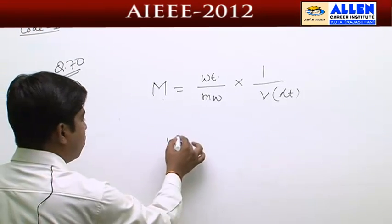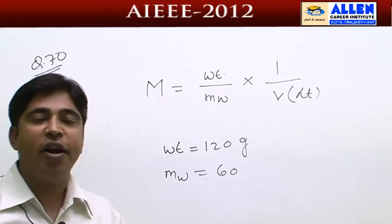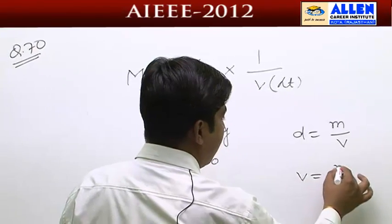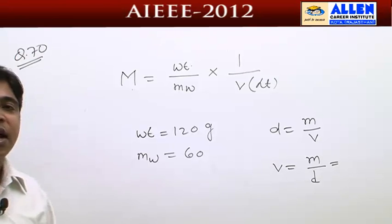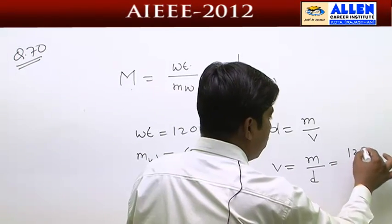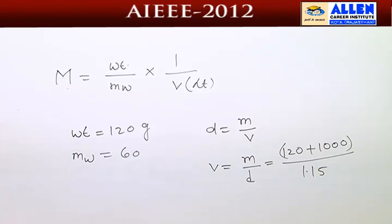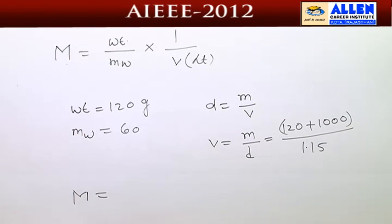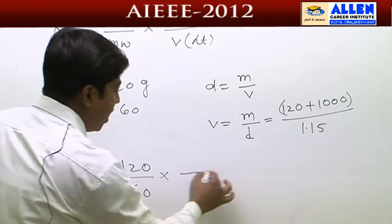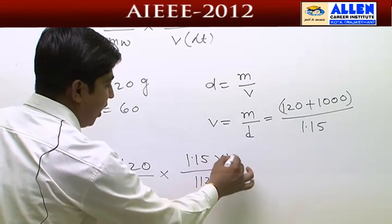In the question, weight of solute is 120 grams, molecular weight of urea is 60. Density is given, and from density we can calculate volume using the formula: volume equals mass divided by density. The mass of solution equals weight of solute plus weight of solvent = 120 + 1000 = 1120 grams. So volume = 1120 / 1.15. Putting it all together: molarity = (120/60) × (1/(1120/1150)) — solving this gives molarity equal to 2.05.